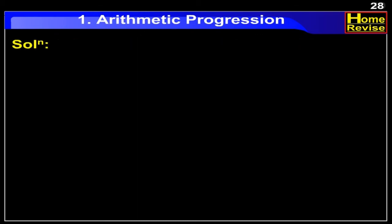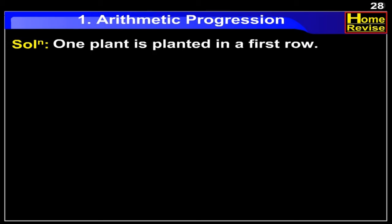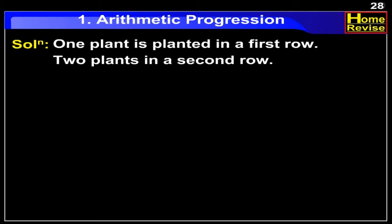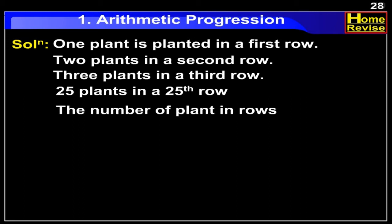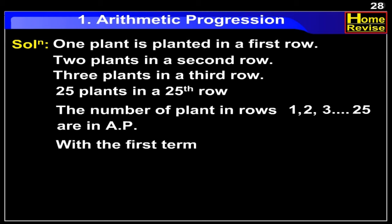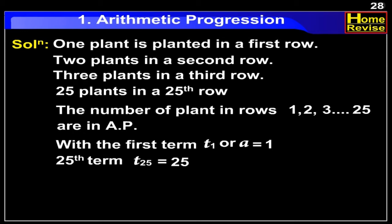Solution: As per the given information, 1 plant is planted in the 1st row, 2 plants in the 2nd row, 3 plants in the 3rd row, and so on, with 25 plants in the 25th row. The number of plants in the rows 1, 2, 3, and so on up to 25 are in arithmetic progression, with the first term T1 equal to 1 and the 25th term T25 equal to 25.